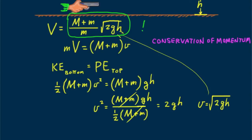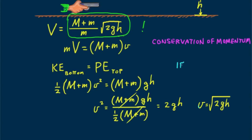I want to leave you with this question: if the same mass bullet were fired at twice the speed into the block, how much higher would the block swing? Until next time, good energy and good momentum!